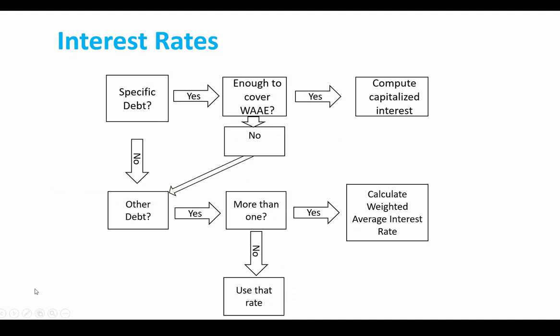Let's look at the interest rates. This is something you might want to save. We're going to go through this in our example. This is how we decide which interest rate we're going to use. If you have specific debt, meaning you borrowed the money for that construction project, it might say the company borrowed X amount of dollars in order to build a building. That's debt that you borrowed specifically for that project. So you look to see if you have enough specific debt to cover your weighted average accumulated expenditures. Remember, the weighted average accumulated expenditures is kind of like our principal. So if you have enough specific debt, then you could just use the interest rate on your specific debt.